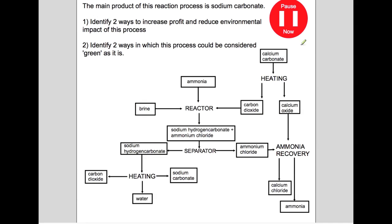This is a schematic of the Solvay process. This is used to produce sodium carbonate. Try and identify two ways that this process could increase its profit and reduce the environmental impact, and two ways that it could also be considered green as it is. Pause the video now.